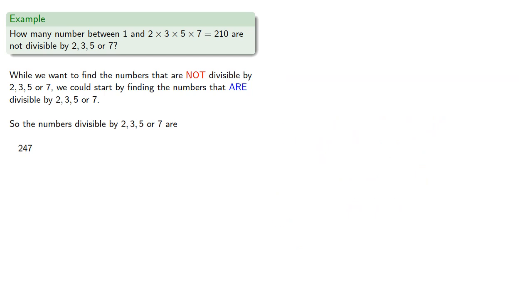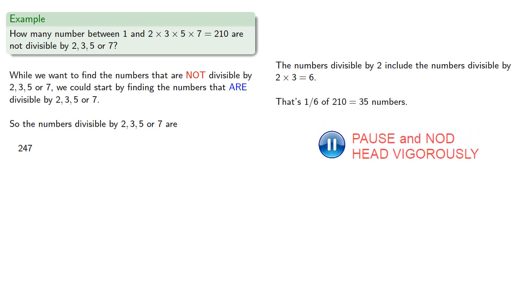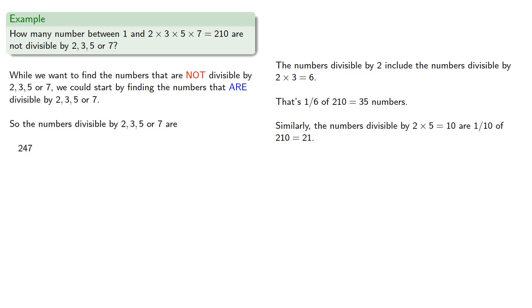So let's look at our pairs, the numbers that are divisible by 2 of our numbers. The numbers divisible by 2 × 3 = 6 are 1/6 of our numbers. Similarly, the numbers divisible by 2 × 5 are 1/10 of our numbers, and the numbers divisible by 2 × 7 are 1/14 of the numbers. And so there are 35 + 21 + 15 numbers that are counted twice, so we'll subtract these off.